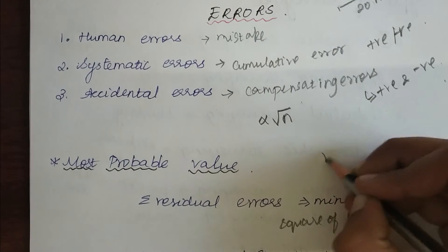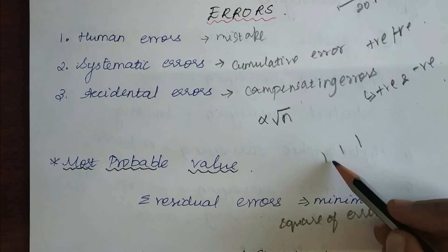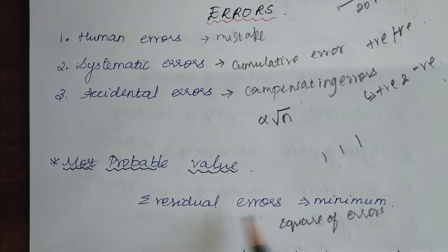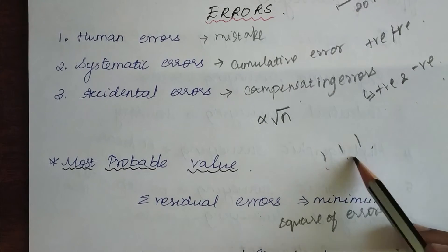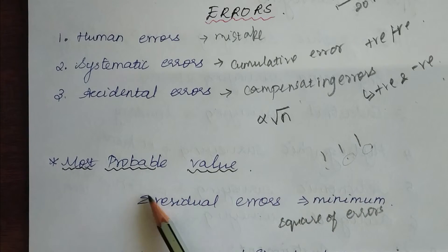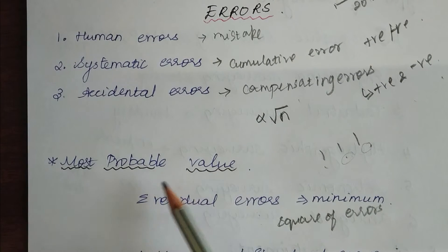Say there are three sets of observations and we find the residual errors for every set. The observation which has the least number of summation will be called the most probable value.